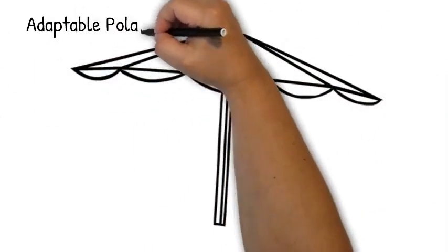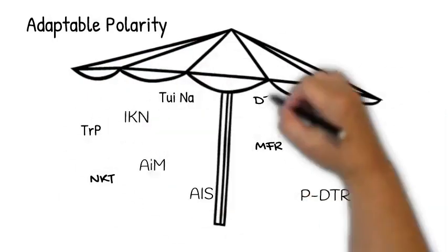What does this mean? It means Adaptable Polarity is a gigantic umbrella for everything.